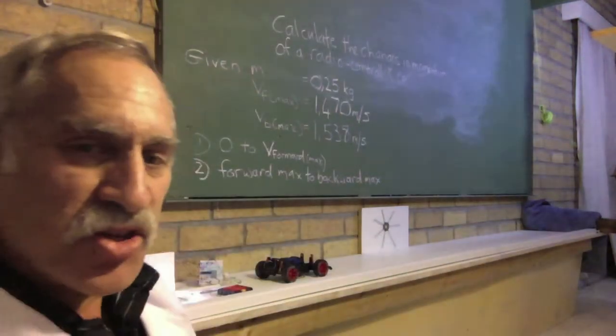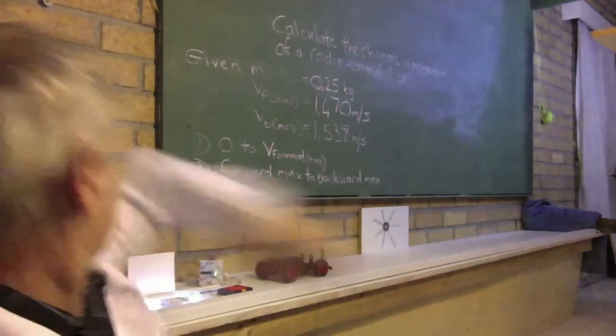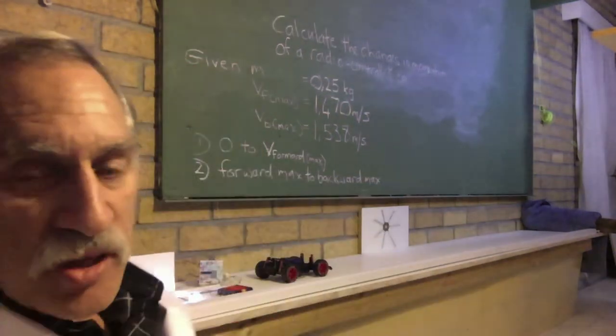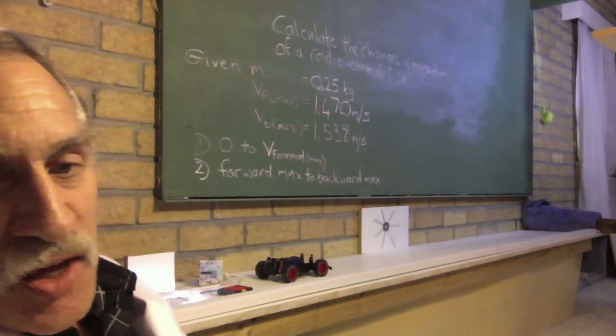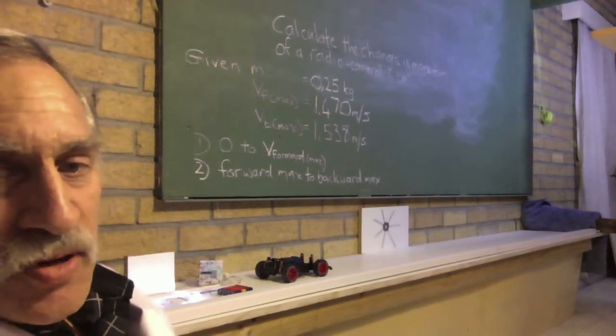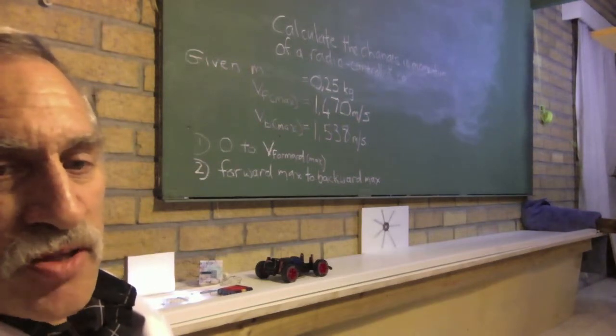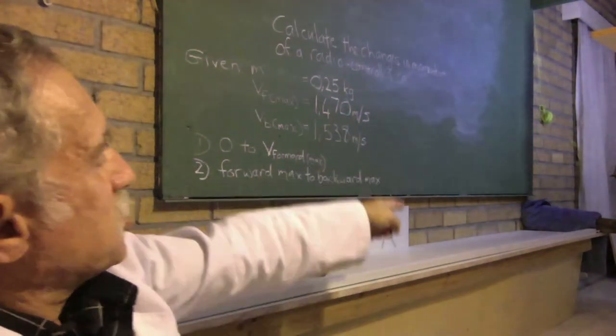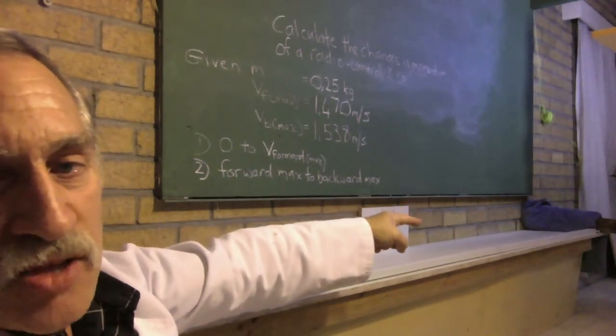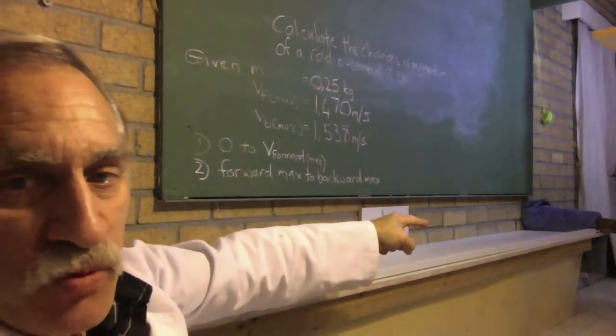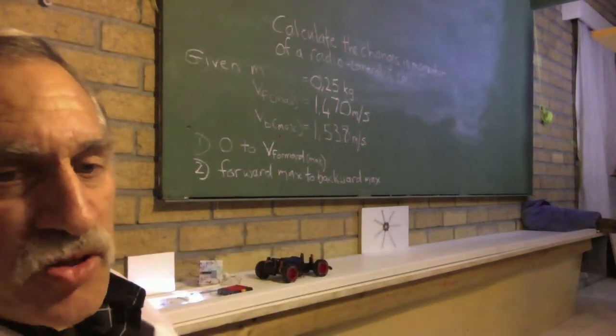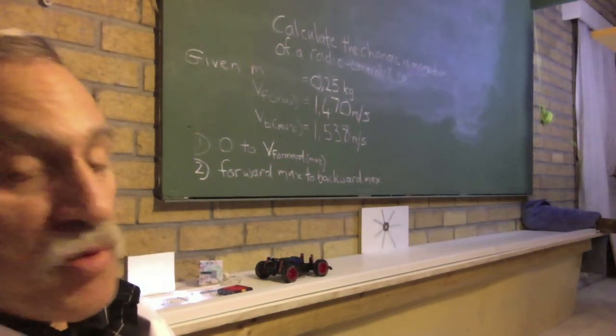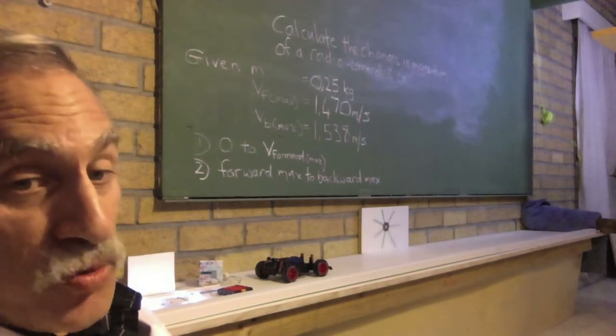Now we're going to ask you to do some work. We don't need the velocity meter anymore. Now we're going to ask you to calculate the change in momentum of this radio control car from the time it starts to the time it's going flat out maximum speed. And we've worked that out as 1.470 meters per second. What will the change of momentum be? And bear in mind that momentum is a vector quantity.